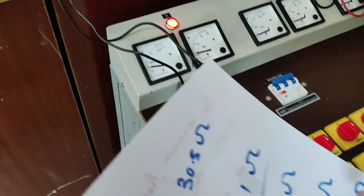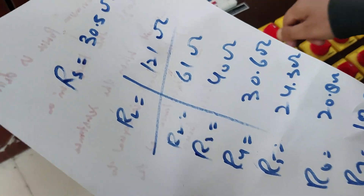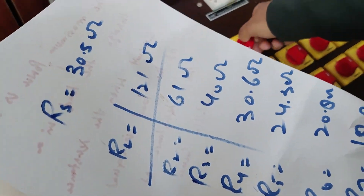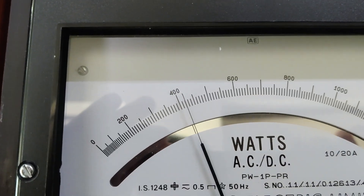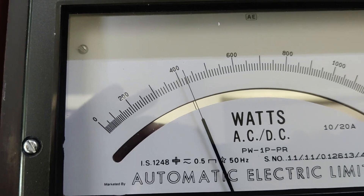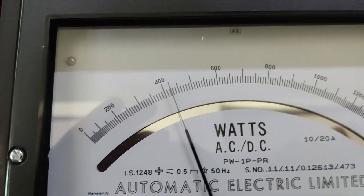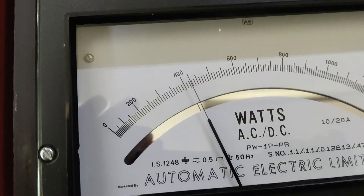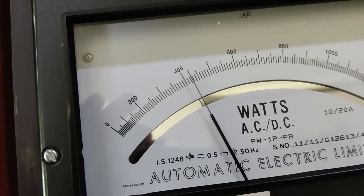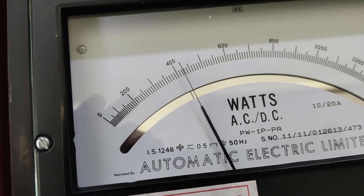Now at step 4 — this is what we have to look at — when the source resistance is equal to the load resistance. This is step 4. Our source resistance is equal to the load resistance, so this will be the maximum power delivered. Our maximum power delivered is almost 420 watts.